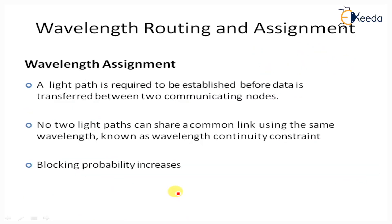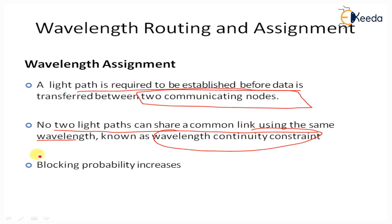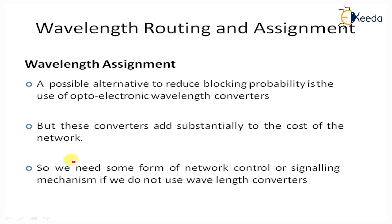In wavelength assignment, a light path is required to be established before data is transferred between two communicating nodes. The connection is established before data is transferred. No two light paths can share a common link using the same wavelength — this is the wavelength continuity constraint. Using this mechanism, blocking probability increases because only one case is used for a particular link, sometimes causing the queue to overflow, resulting in blocking and drop mechanisms.